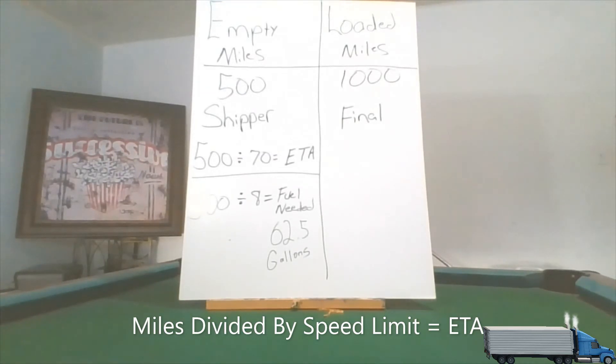And that will give you your ETA. So the first thing we just learned: you want to take the miles that you're going to be traveling divided by the speed limit and it should give you your ETA, estimated time of arrival, how many hours it's going to take to get these amount of miles by the speed limit. And once we figure that out, now we want to see how much fuel we need to get those amount of miles done.